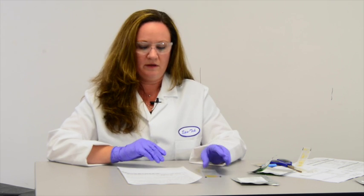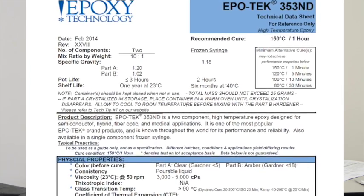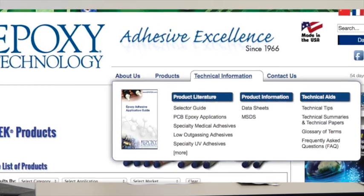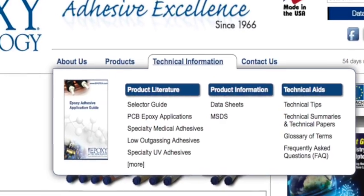You may want to write down the time at this point so that you can keep track of the material's pot life. The pot life is also found on the datasheet and is important to pay attention to as this is the time for optimum bonding. Additional information on pot life can be found in the technical information area of our website.